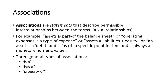Associations are statements that describe permissible interrelationships between terms — relationships. For example: assets is part of the balance sheet, operating expenses is a type of expense, or assets equals liabilities plus equity, or assets is a debit and it is as of a specific point in time. There are three general types of associations: something is a type of something else, something has a part, or something is a property of something else.